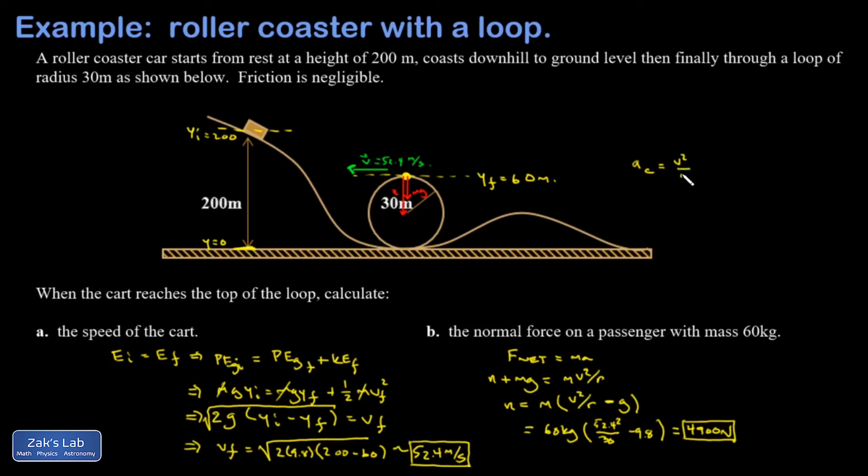So I'm going to look at the centripetal acceleration. I get 52.4 meters per second all squared divided by my radius of curvature, which was 30. And I get 91.5 meters per second squared. And if I divide that by g, that turns out to be 9.3 g's.